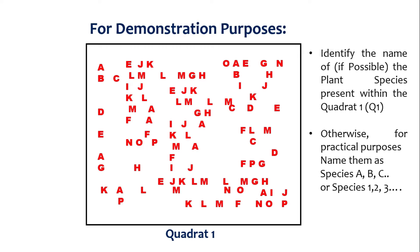Otherwise, if you are new in the field of plant study, for practical purposes, select and name the species as Species A, B, C, D, and so on, or Species 1, 2, 3, 4, and so on, for the species that are found within Quadrat 1.